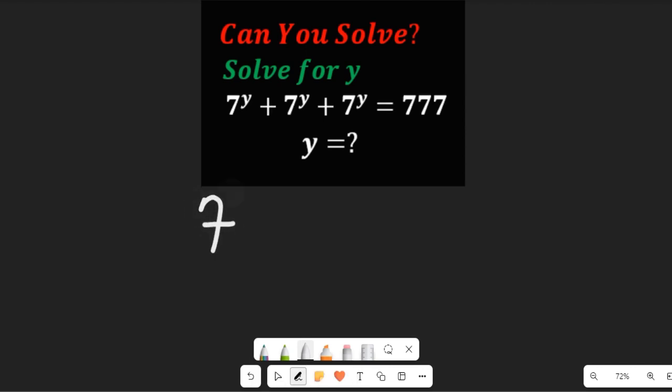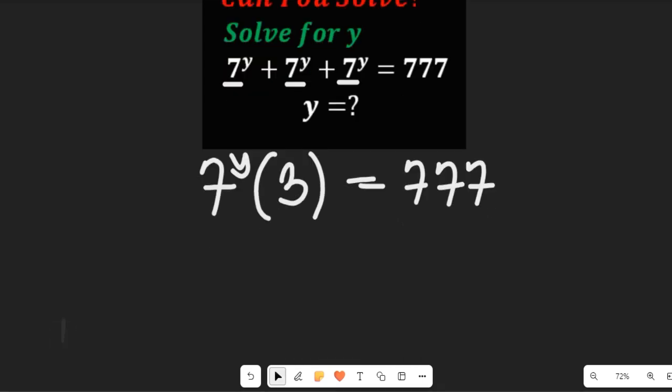So that will make 7 to the power of y multiplying 3, because if we add these values together, we get 3, and this will equal 777. Cool, right?